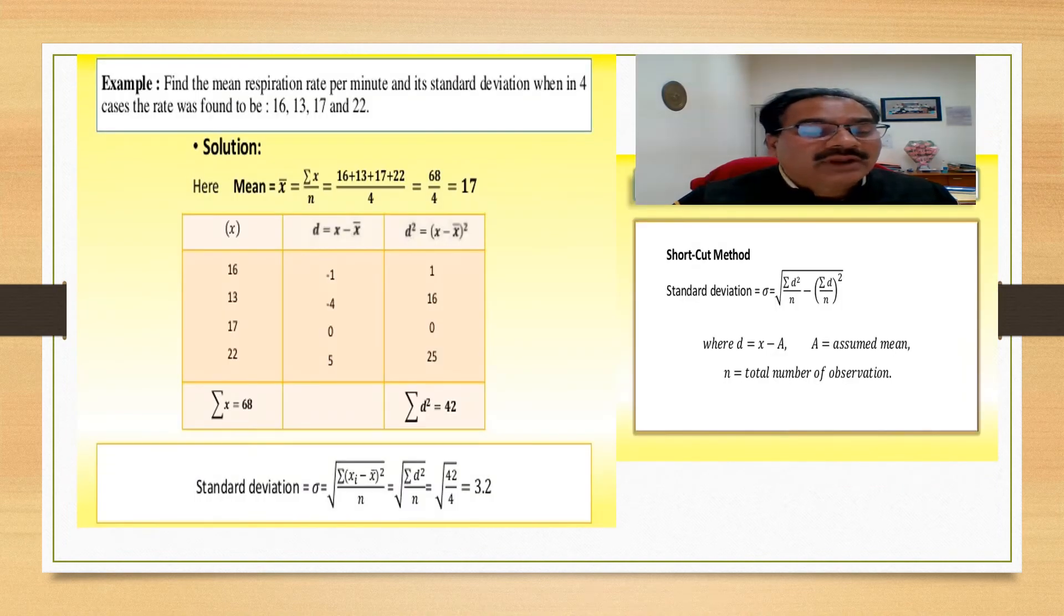Now, you look at the problem, a very interesting problem. You find the mean respiration rate per minute as the standard deviation when in four cases the rate was found to be 16, 13, 17 and 22. So, mean is quite easy and you may calculate that is 17. Now x, this is the table for x. These are all the values: 16, 13, 17 and 22.